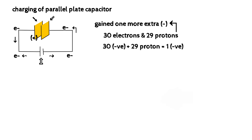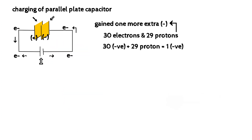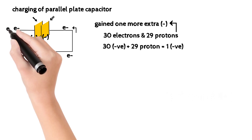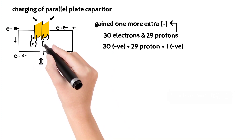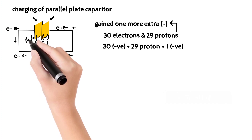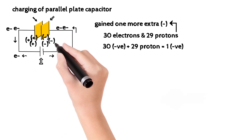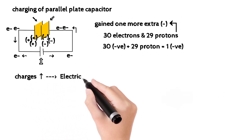At the same time, free electrons joining the right-hand side conductor give it an extra negative charge — 30 electrons and 29 protons. This process continues: free electrons are released from the left plate, making it more positive, while the right plate accumulates more negative charges. As charges accumulate, a potential difference develops across the capacitor plates.